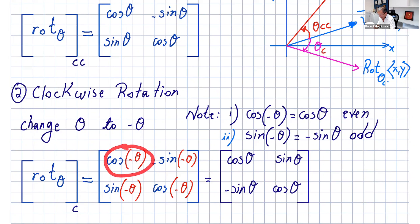So let's apply that. Cosine of negative theta stays cosine theta. Negative sine of negative theta is negative negative sine theta, which is just sine theta. That changes to negative sine theta, and cosine of negative theta is just cosine theta.